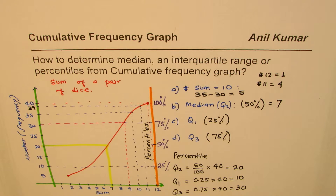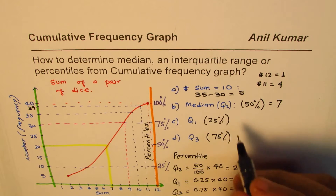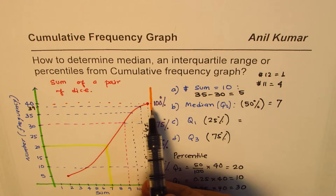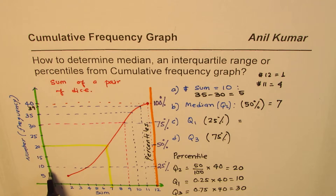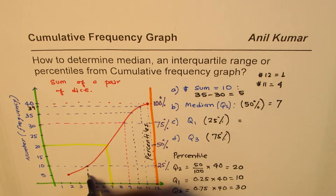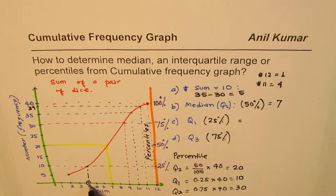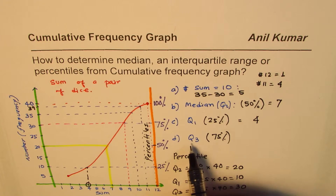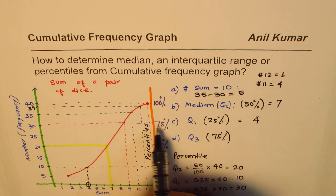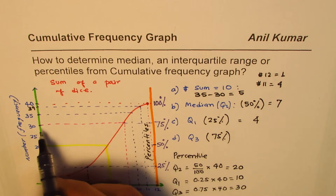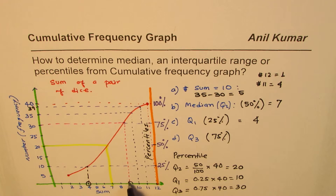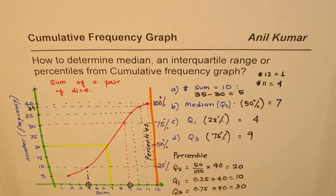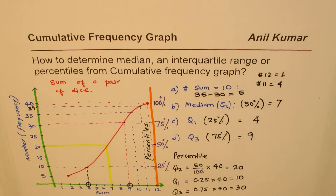From the graph, Q1 is at cumulative frequency 10, which corresponds to a sum of 4. For Q3, at cumulative frequency 30, we draw a horizontal line, bring it back to the curve, and drop down to get a sum of 9. So Q1 = 4, Q2 (median) = 7, and Q3 = 9.